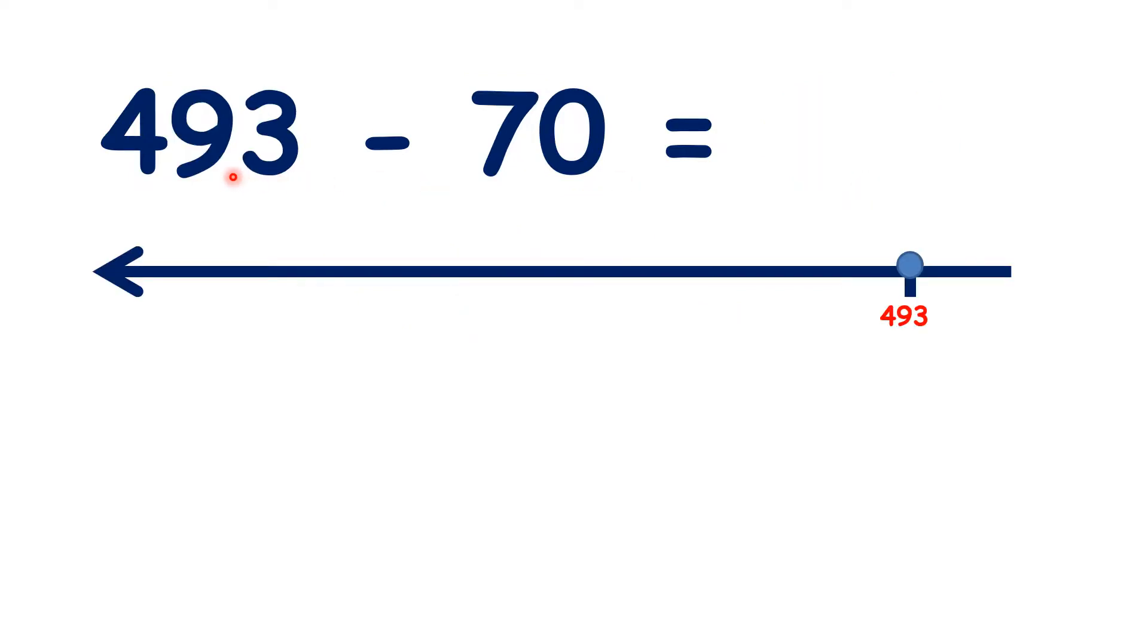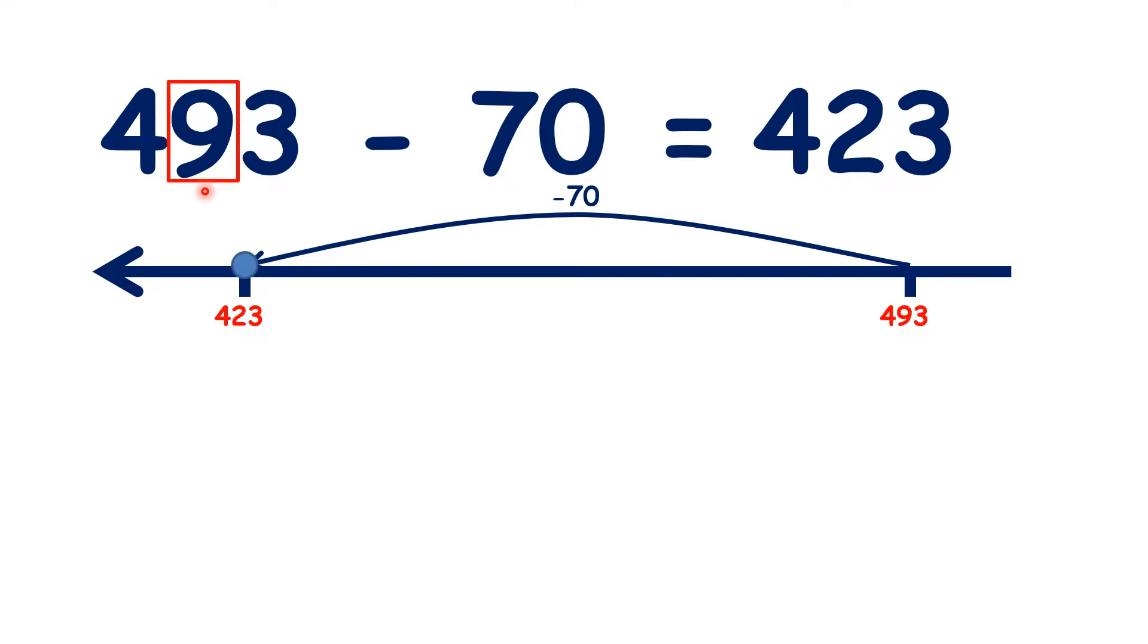So what is 493 minus 70? Taking away 70, or 7 tens, gives us 423, because we started with 9 tens, subtracted 7 tens, and because 9 take away 7 is 2, that gives us 2 tens in our answer.